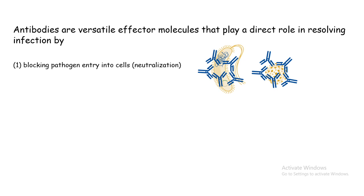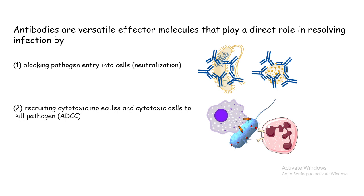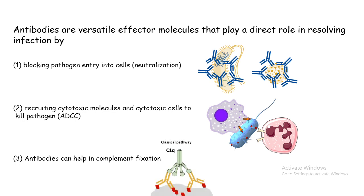The second mechanism involves coating the pathogen surface with antibody, making these pathogens weak or opsonized. They can then be killed by antibody-mediated cytotoxicity, also known as the ADCC mechanism. Lastly, antibodies can also help in complement fixation, which would ultimately destroy the pathogen.